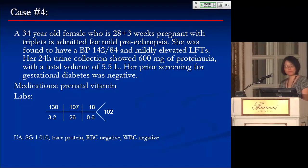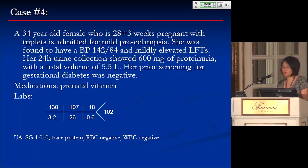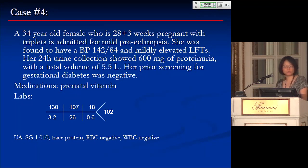Case four is a 34-year-old female, 28 plus three weeks pregnant with triplets, admitted for mild preeclampsia. Blood pressure was 142 over 84 with mildly elevated LFTs. Her 24-hour urine collection showed 600 mg of proteinuria with a total volume of 5.5 liters. Prior screening for gestational diabetes was negative. Labs: sodium 130, potassium 3.2, chloride 107, bicarb 26, BUN 18, creatinine 0.6, glucose 102.